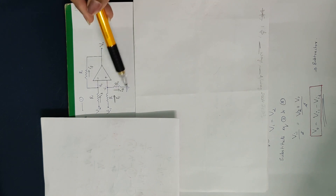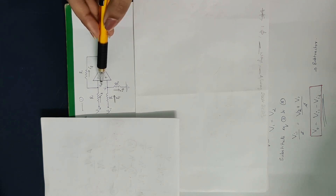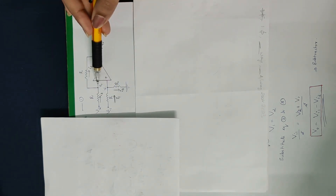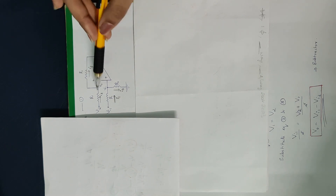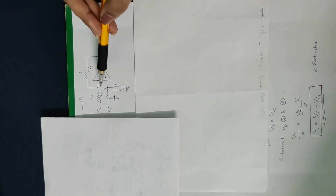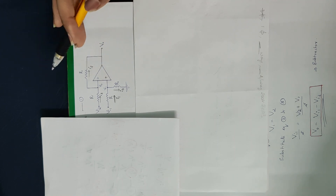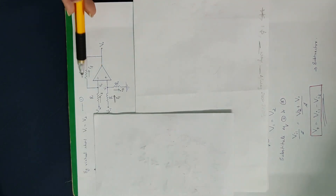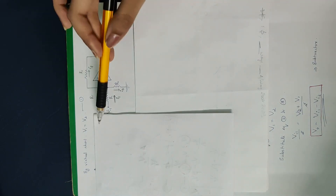Now we can solve the closed loop amplifier or open loop amplifier and derive the output. We can add V1 and V2 values. Now the next step is the virtual short concept. Negative feedback is used, and the virtual short concept states that V+ is equal to V−.